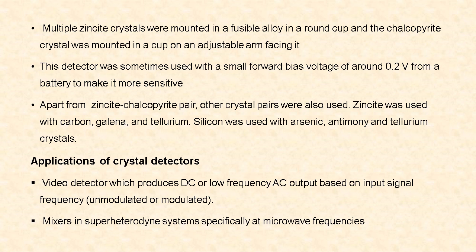Apart from the zinc oxide and chalcopyrite pair, other crystal pairs were also used. Zinc oxide was used with carbon, galena, and tellurium. Silicon was used with arsenic, antimony, and tellurium crystals.